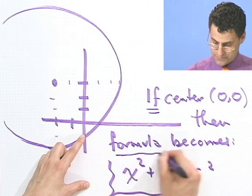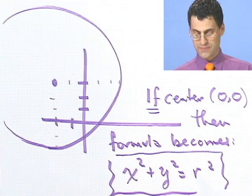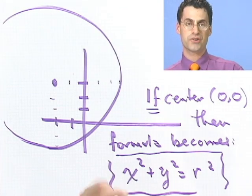It becomes really easy. It just becomes x² + y² = r². And so there's a very special case, in fact. When the circle is centered at the origin, so right at the origin and goes around by a certain radius, the equation of it is very simple. It's just x² + y² = r².